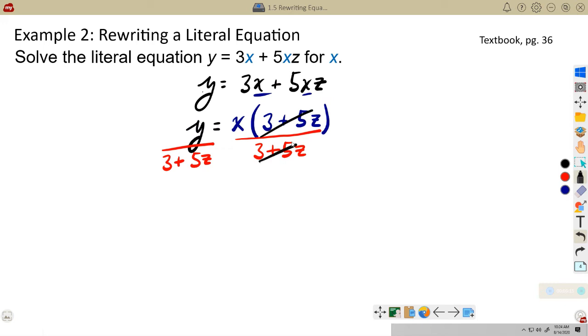So these will cancel and these will cancel. And this will be y over, and I'm going to change this to 5z + 3. I'm not sure what the book has. Again, in normal algebra, we try to, when we write these expressions, we try to put the variable first and the numbers at the end. Let's go to example.